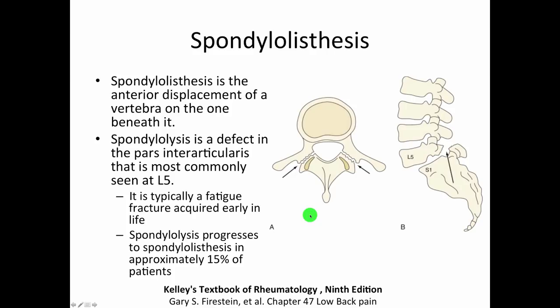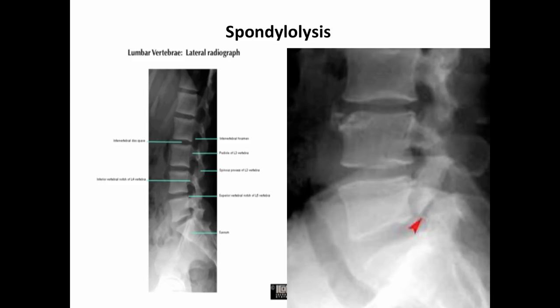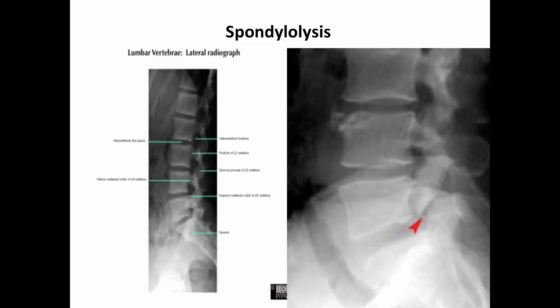Spondylolisthesis can be graded based on how far the vertebra slips forward relative to the one below. Grade 0: no slippage. Grade 1: 0–24%. Grade 2: 25–49%. Grade 3: 50–74%. Grade 4: 75–99%. Complete displacement is spondyloptosis. A lateral X-ray is the best way to visualize this. You can see a pars fracture with the 'magic red arrow' sign — a pars fracture at that level but no slippage yet indicates spondylolysis.